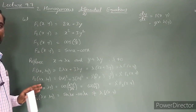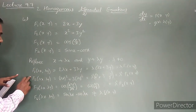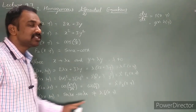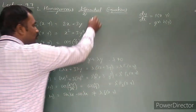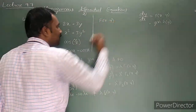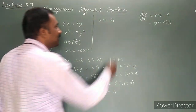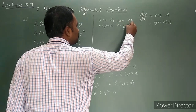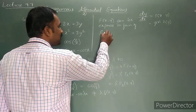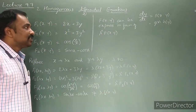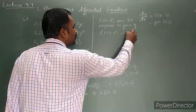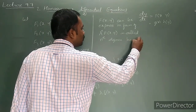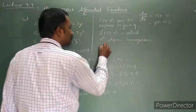So the conclusion is: f1, f2, and f3 are homogeneous functions, while f4 is not a homogeneous function. A function f(x, y) is called an nth degree homogeneous function if it can be expressed in the form λⁿ · f(x, y). Here f1 is 1st degree, f2 is 2nd degree, f3 is 0th degree homogeneous function.